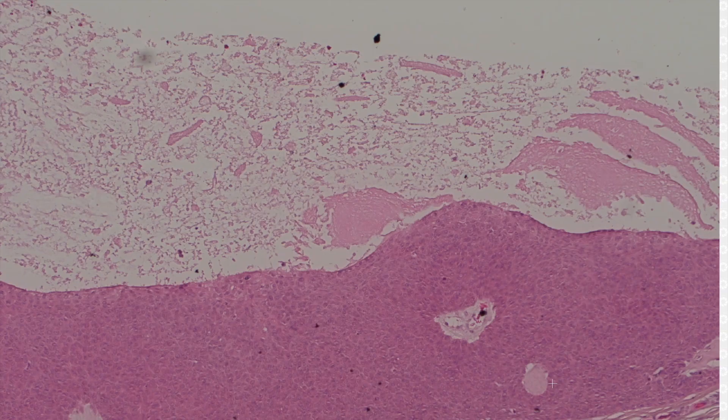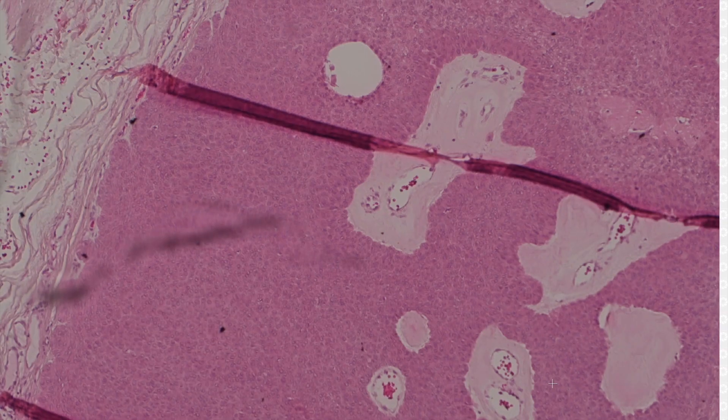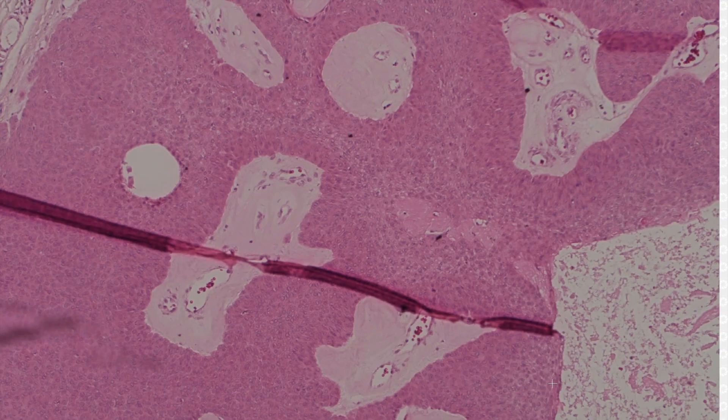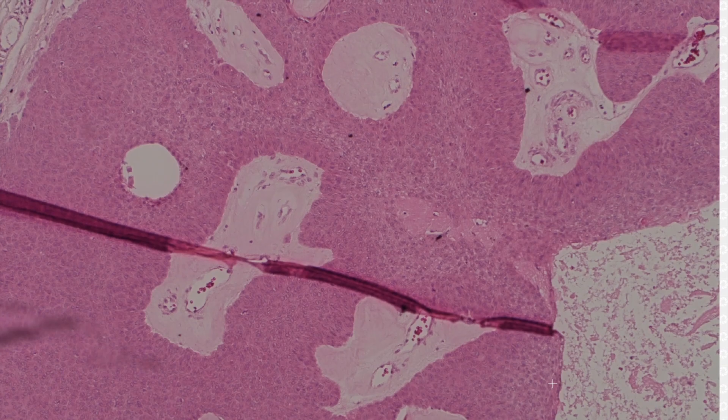Sometimes they have really prominent clear cell change, like actual optically clear. I've seen cases of hydratonoma that mimicked metastatic renal cell carcinoma and were misdiagnosed as such.